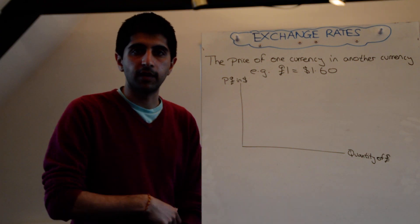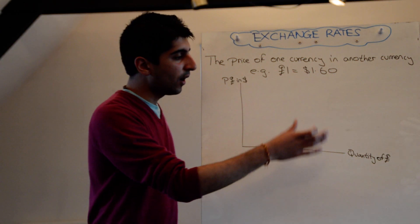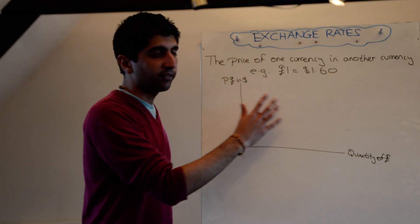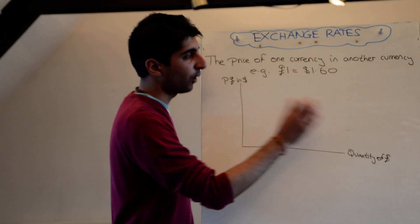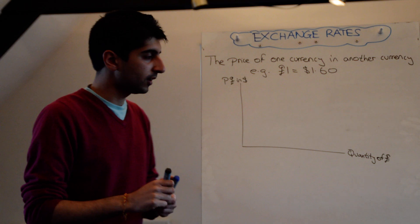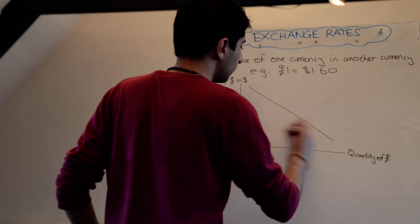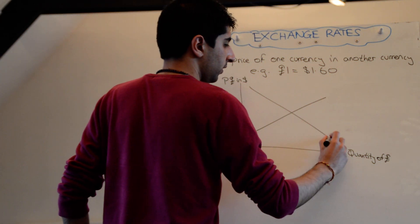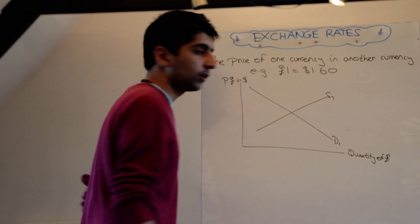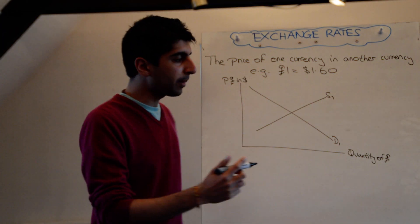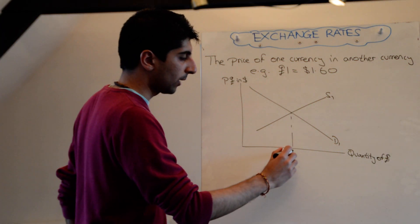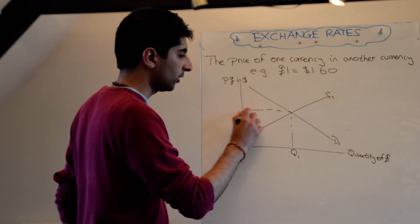And on the x-axis, quantity of the currency, you have the market force. In this case, quantity of the pound. We're working out the pound exchange rate. So when working out the exchange rate of the pound in dollars, we have a demand for the pound, and a supply of the pound, and where they intersect we have equilibrium.